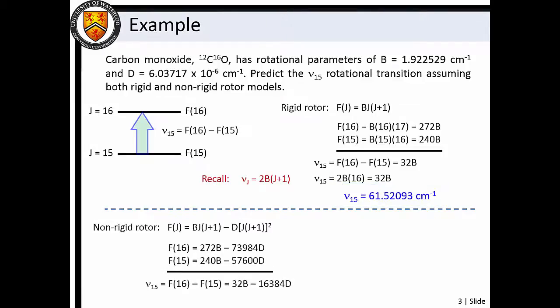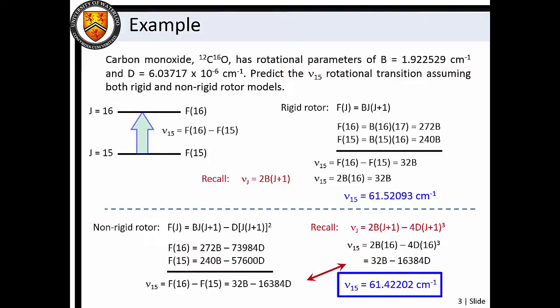To be more accurate, we can employ the centrifugal distortion constant to correct for the bond elongation due to rotation. Now we see that the ν₁₅ transition equals 32B − 16,384D. Substitution of the B and D constants yields a value of 61.42202 cm⁻¹.